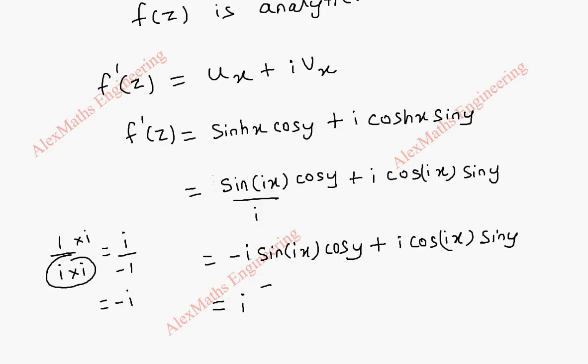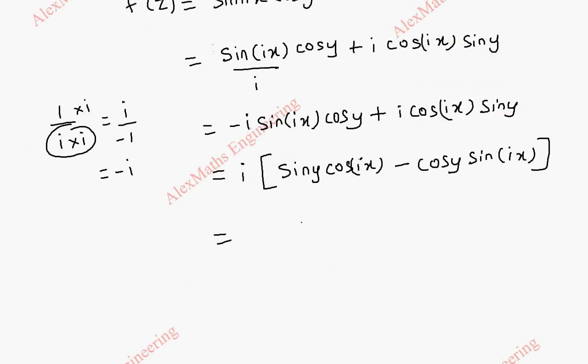You can take minus i or plus i common. So, when I take i common, let's write the second term first. That is, sin y cos ix. The second term I have written. Then, minus cos y sin ix. So, this is once again, sin a cos b minus cos a sin b. So, this can be written as sin of a minus b. But again, we can rearrange this term. i into sin of when i is taken out.